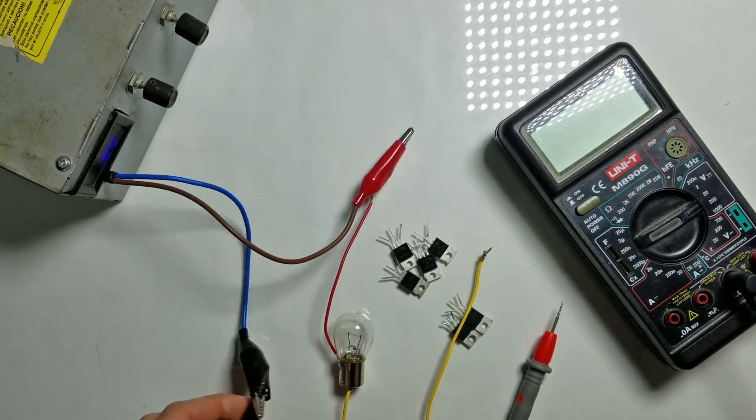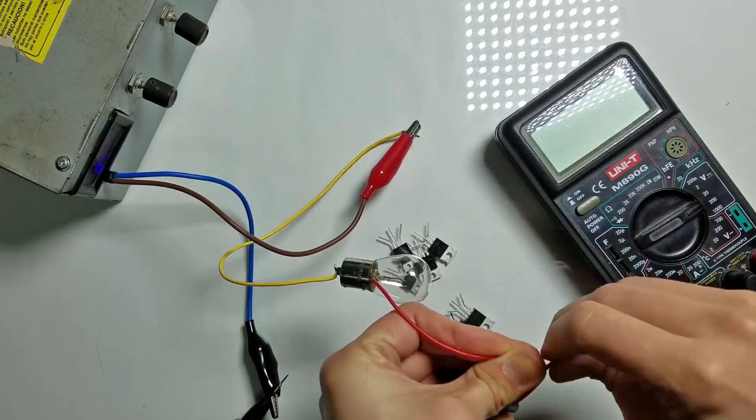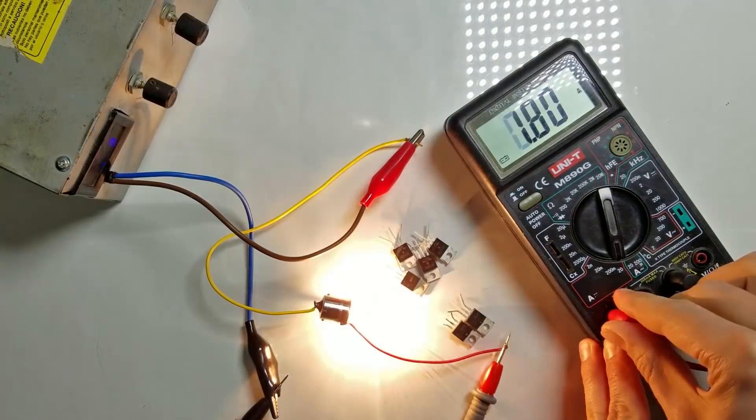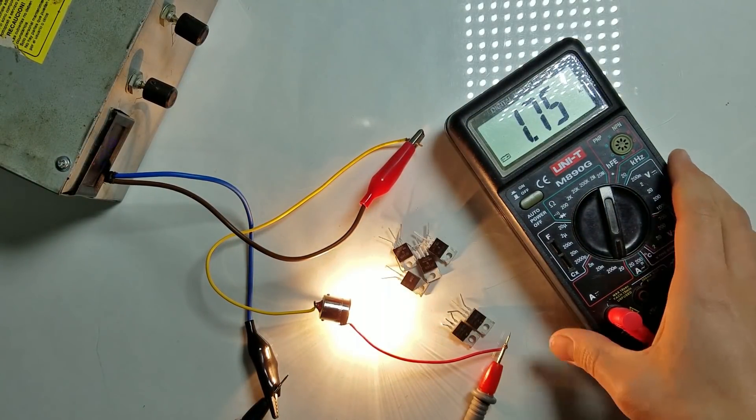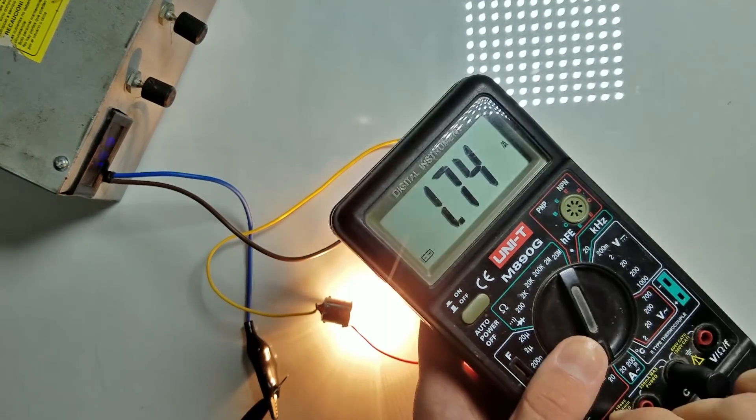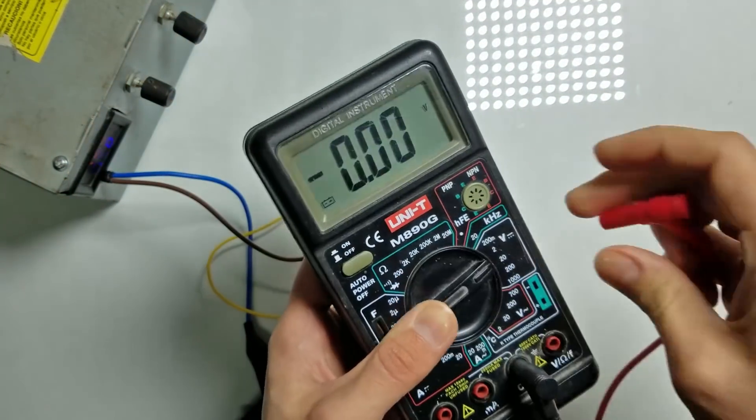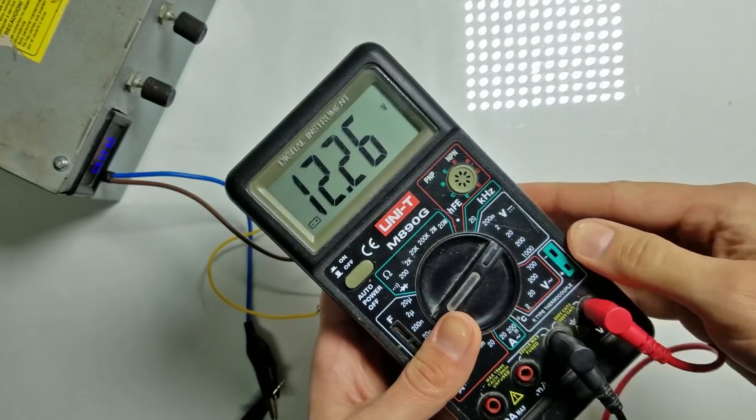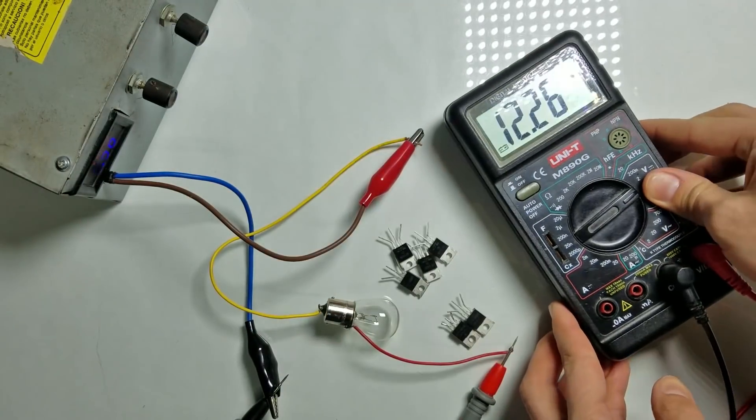Let's measure the current first. We'll need this information later. So we have 1.75A. Now I'll show you that it's actually 12V. Well, it's 12.2V.